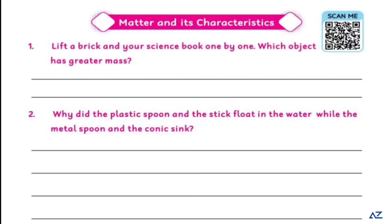Ab dekhiye ga ki brick jo eent hoti hai, eent ka kitna weight hota hai aur jo book hai uska kitna weight hota hai. Dono mein se kis ka heavy weight hota hai? To brick has a greater mass because it is heavy and it is difficult to hold. You can easily hold a book but it is difficult to hold a brick because it is heavy.